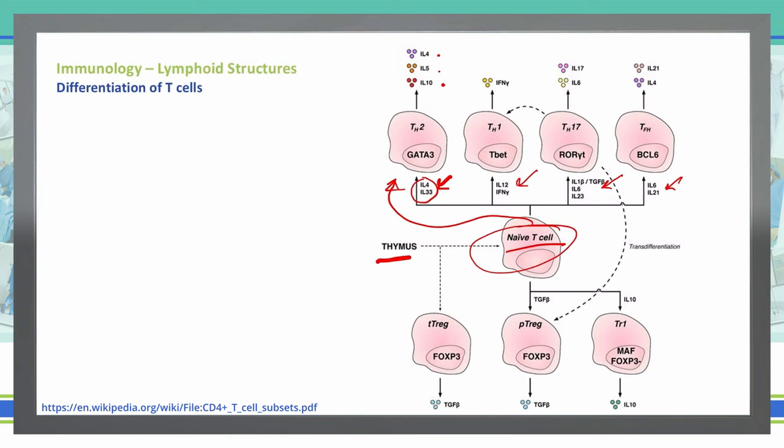If the naive T cell comes into contact with IL-12 or interferon gamma, that will transform it into a T-helper 1 cell, which can then give off more interferon gamma. This is how we can get that positive feedback loop, where it gives off more and more.